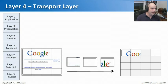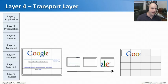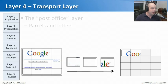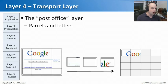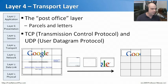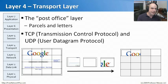We often think of layer three as being the truck that takes information from one side of the network to the other. But there's always going to be something in the back of that truck — some parcels, some cargo. Layer four, the transport layer, provides the methodology that fills in those parcels — the actual data that gets from one side of the network to the other. This is also the layer where we start to see protocols like TCP, Transmission Control Protocol, and UDP, User Datagram Protocol — transport protocols that sit on top of IP.